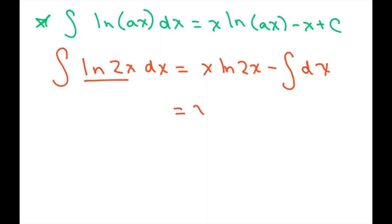So this is going to equal x ln of 2x, and the antiderivative of dx is just x, so you get minus x plus c.